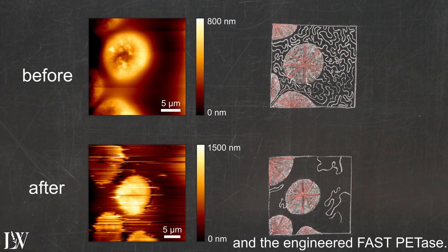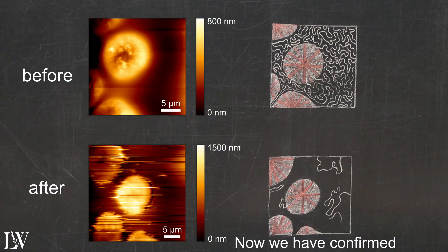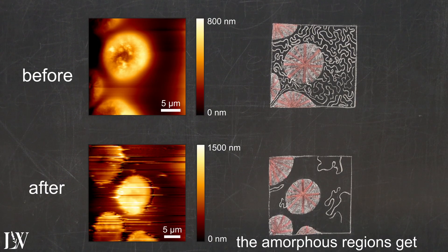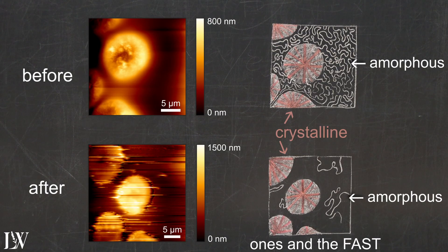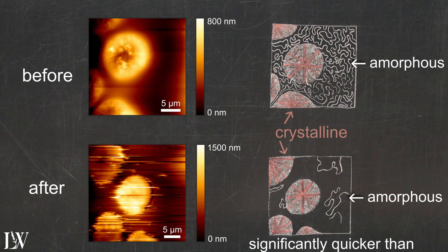Now we have confirmed microscopically that the amorphous regions get degraded indeed faster than the crystalline ones, and the fast petase is indeed significantly quicker than the wild type version.